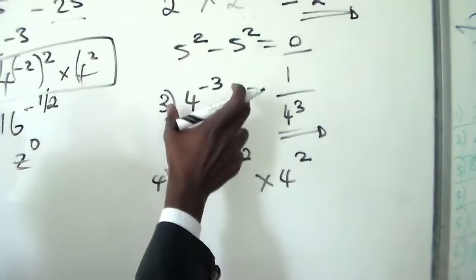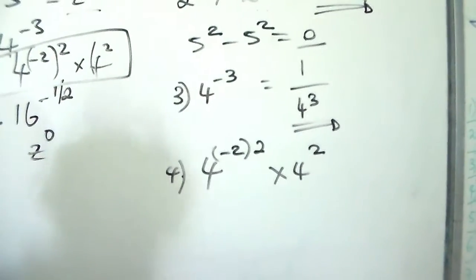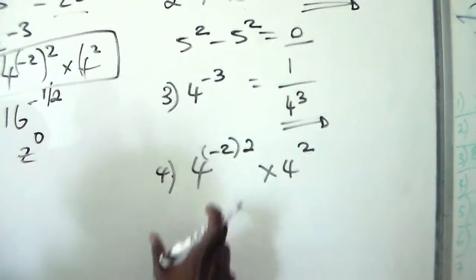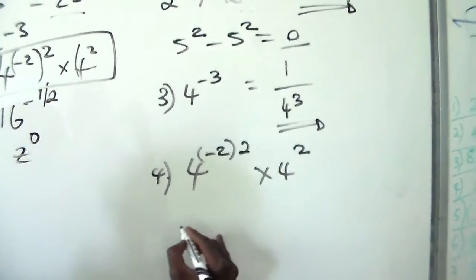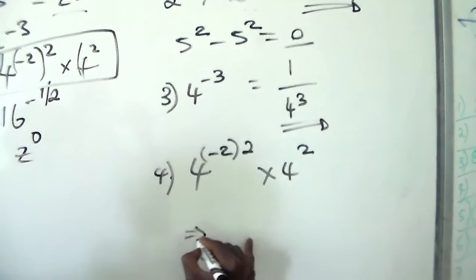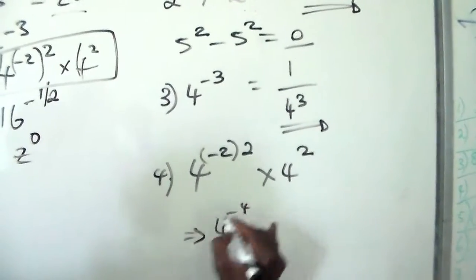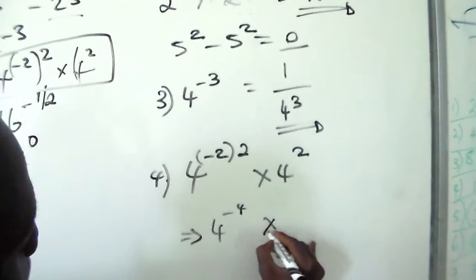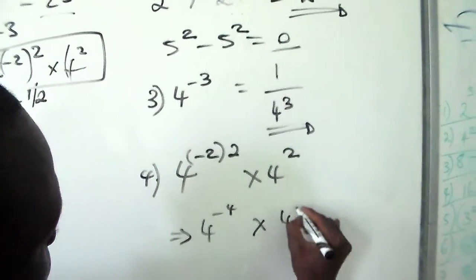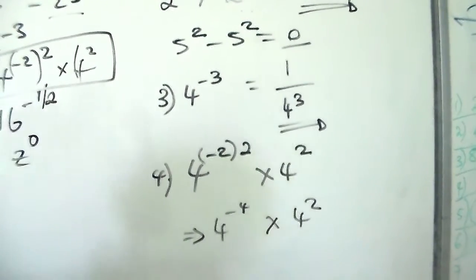Just as we did on question number three, we multiply the powers, which gives us four to the power of minus four, then multiplied by four to the power of two.